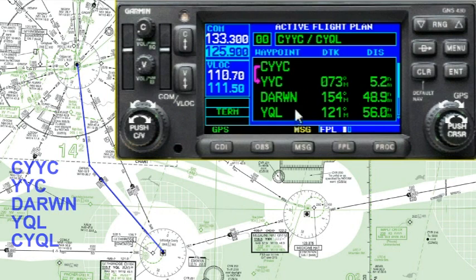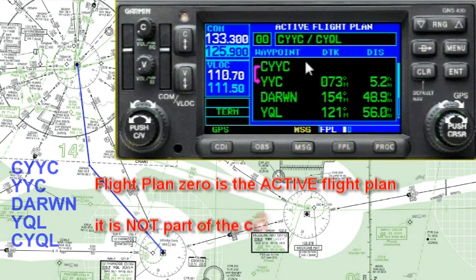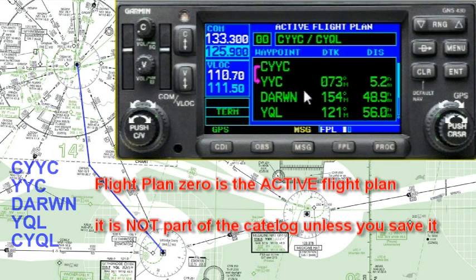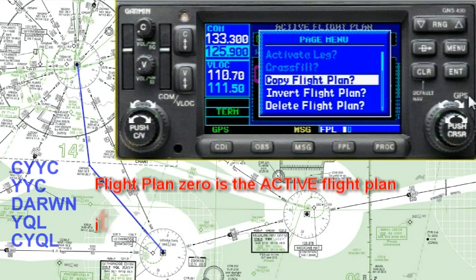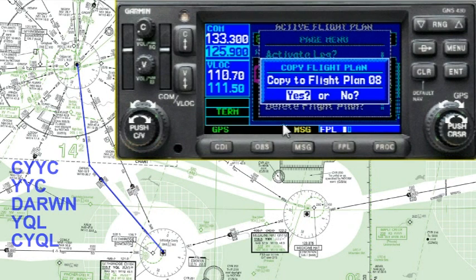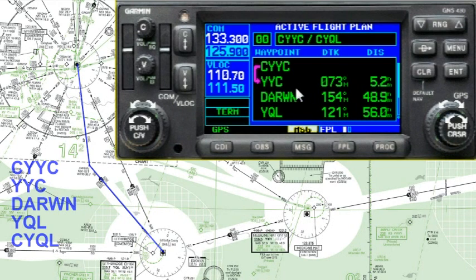If you suddenly think you really should have saved this flight plan — because flight plan zero, if you delete it, it's gone — you can go in and select copy flight plan. If you hit enter, it will make this flight plan number eight. I'm going to cancel because this flight plan is already in the database. But if it hadn't been, I could have made a copy, which would be a favor if this is a flight I'll be repeating numerous times.